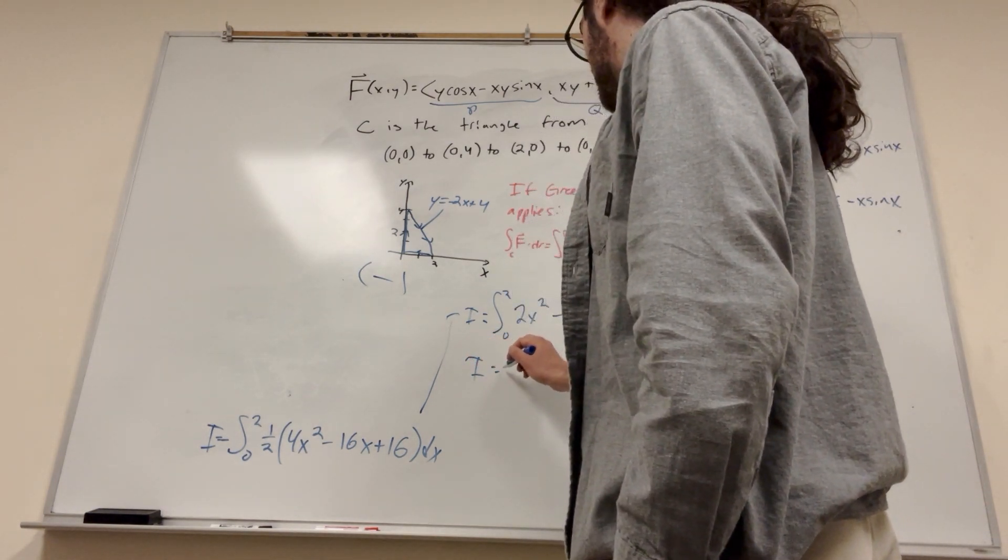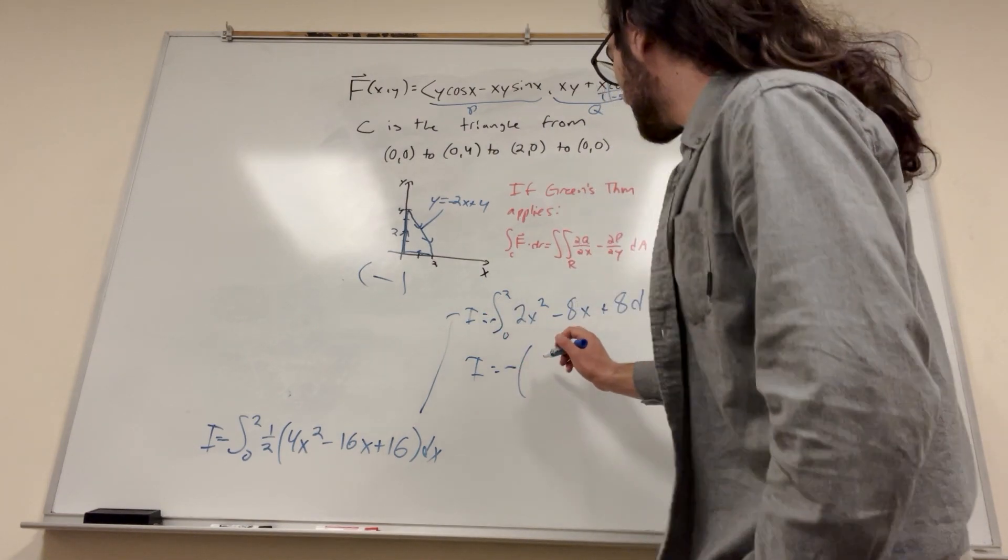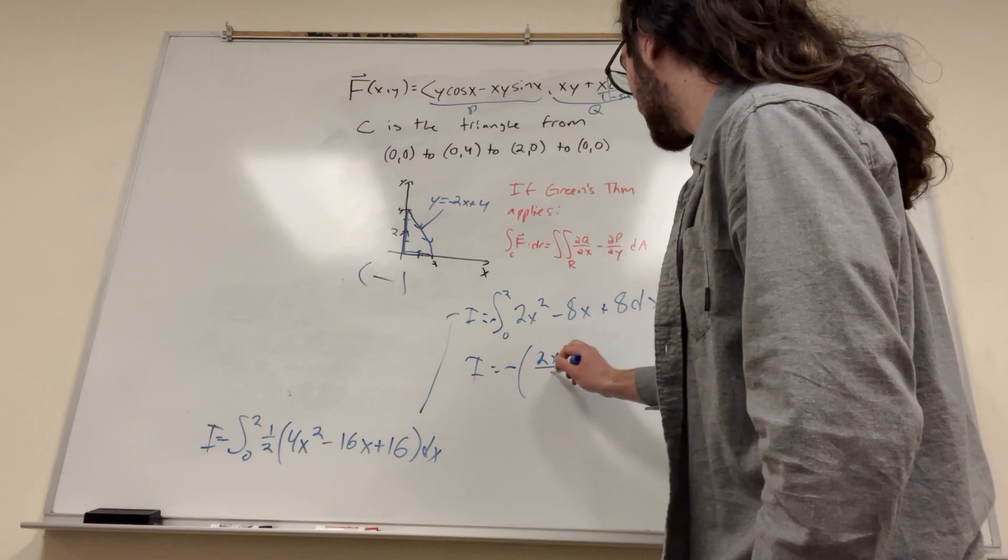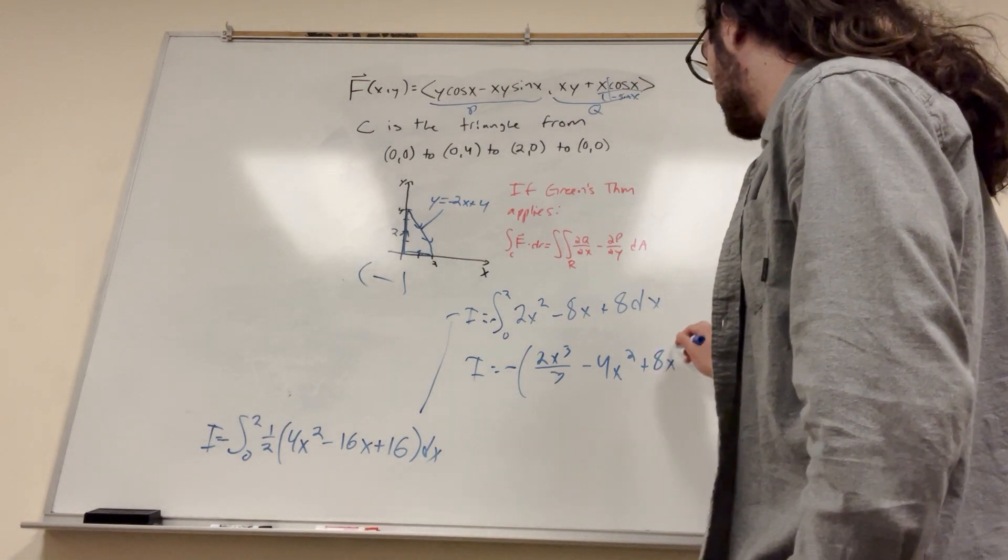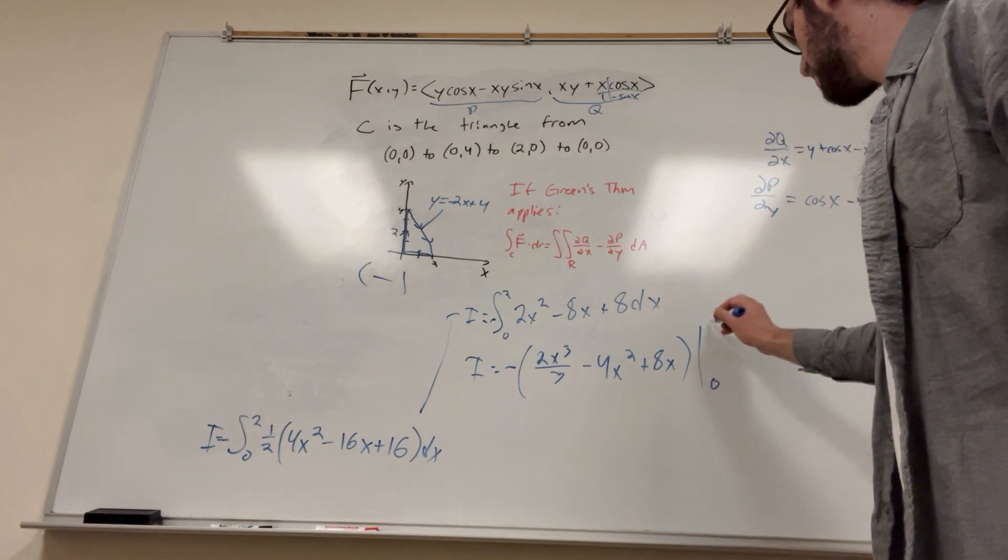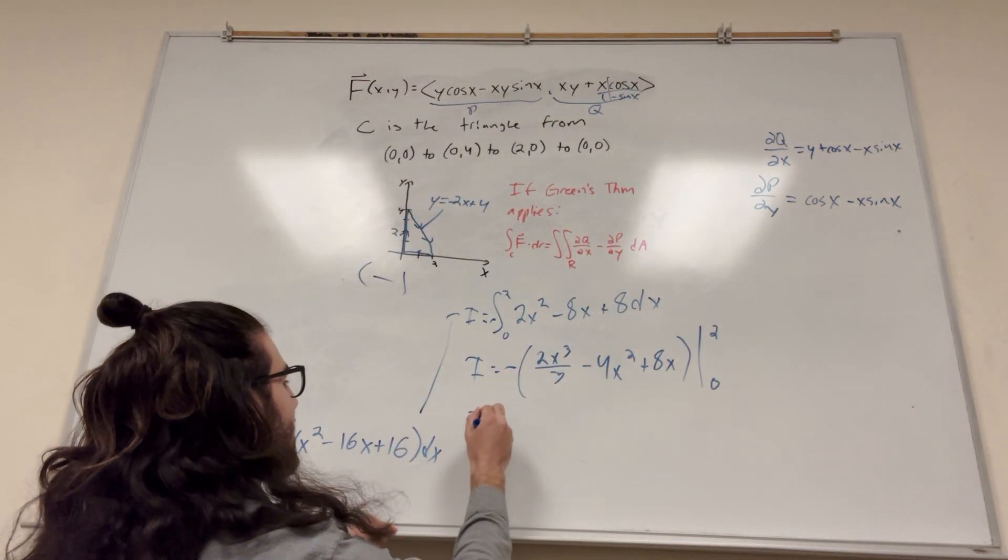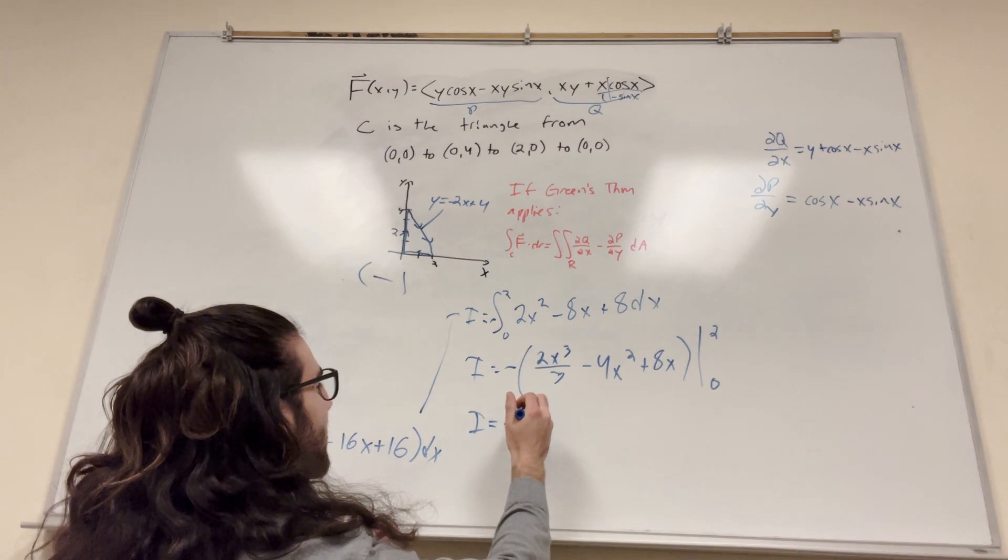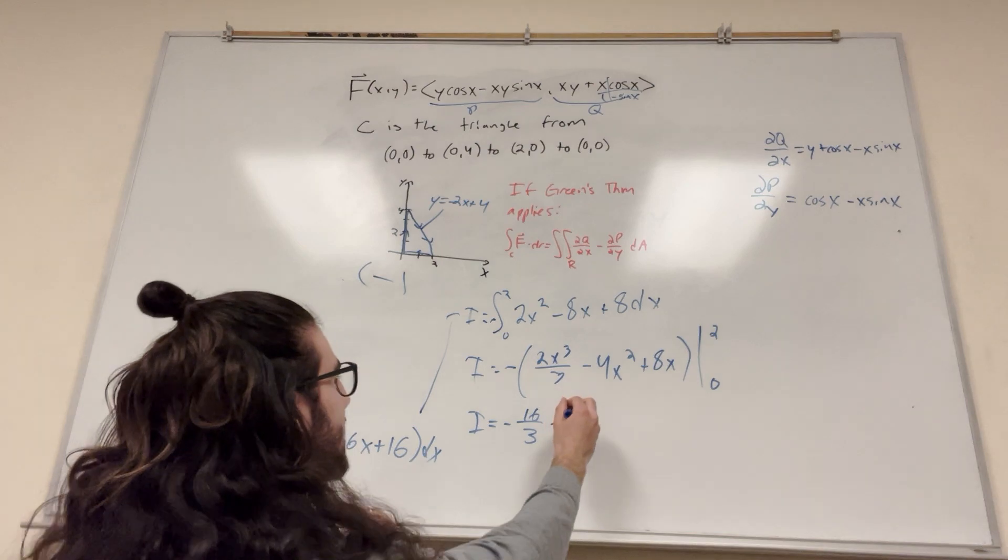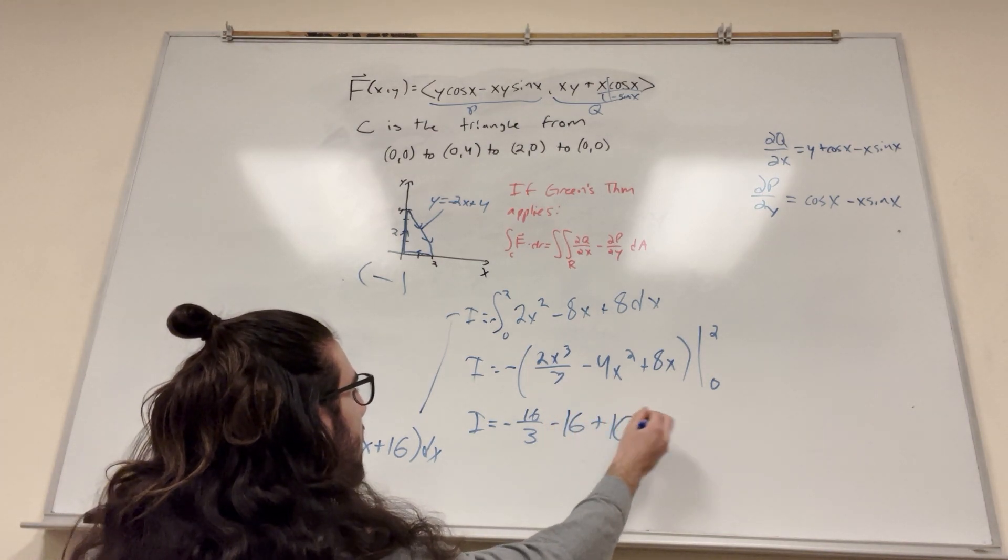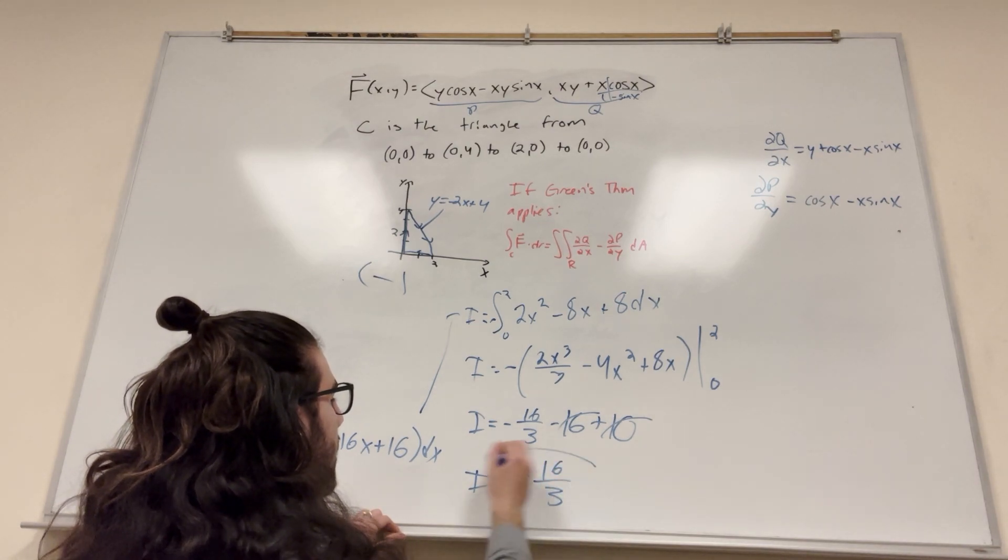So that's going to be 2x squared minus 8x plus 8 dx, which of course is going to be equal to—oh, I forgot my negative. Yeah, I'm telling you guys, can't forget the negative. So let's integrate this: 2x to the third over 3 minus 4x squared plus 8x, from 0 to 2. Integrals. So of course, it's going to be equal to negative 16 over 3 minus—oh, 2 times 8 is 16—then plus 16. 16 is going to cancel, and it's just going to leave you with negative 16 over 3. Final answer.